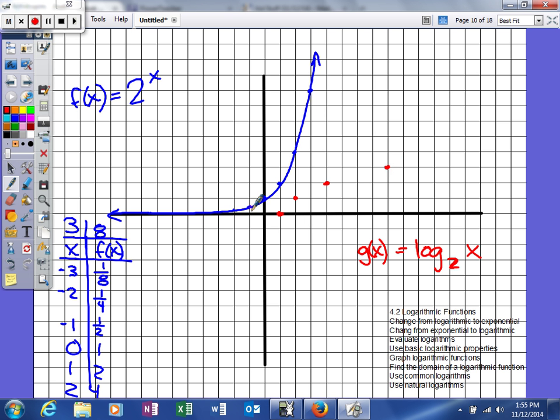So if you look, this is negative 1, 1 half. This will be at 1 half, negative 1. This right here is negative 2, 1 fourth. This will be at 1 fourth, negative 2. So when we end up graphing this, our function will look a little bit like this.